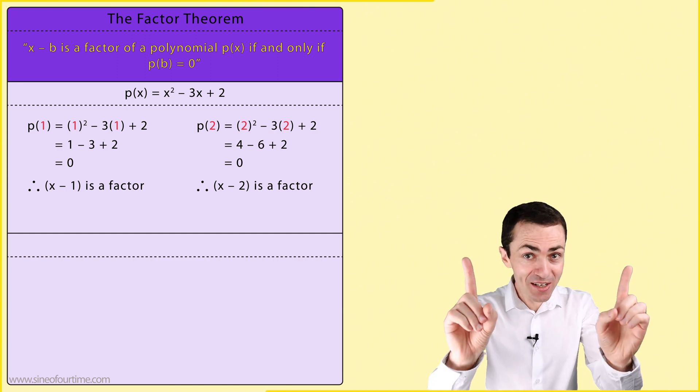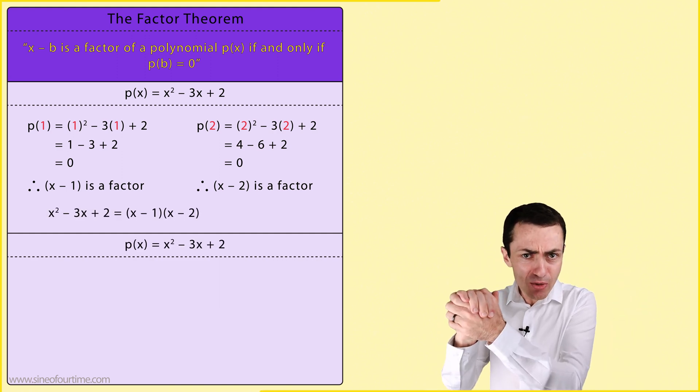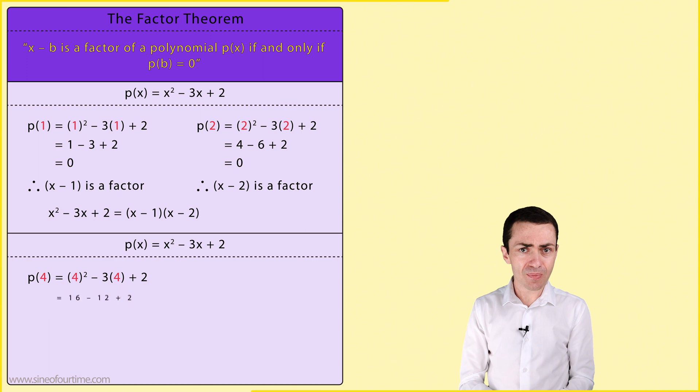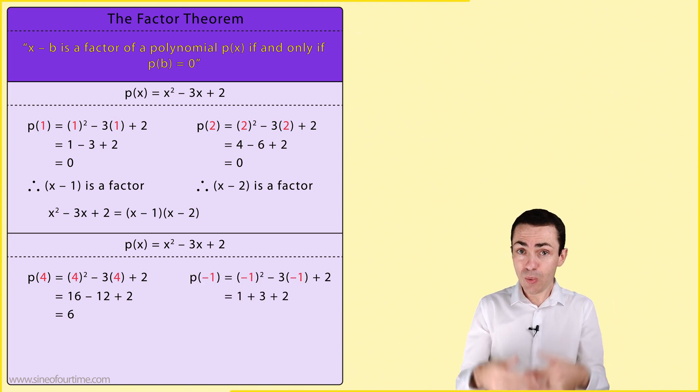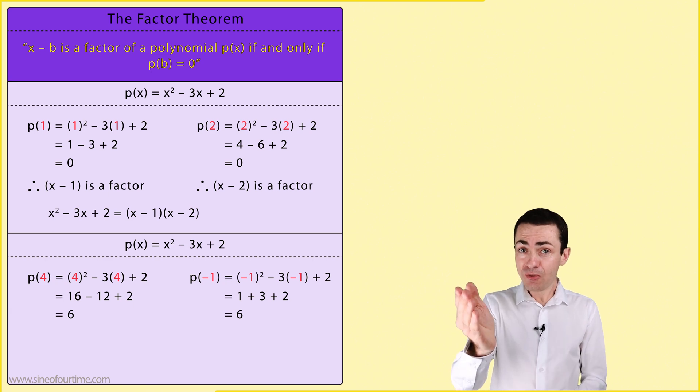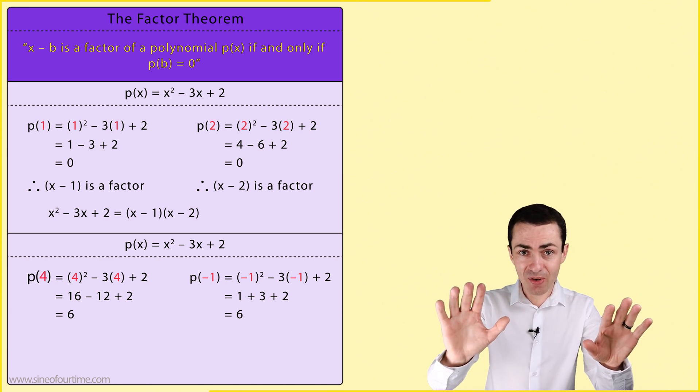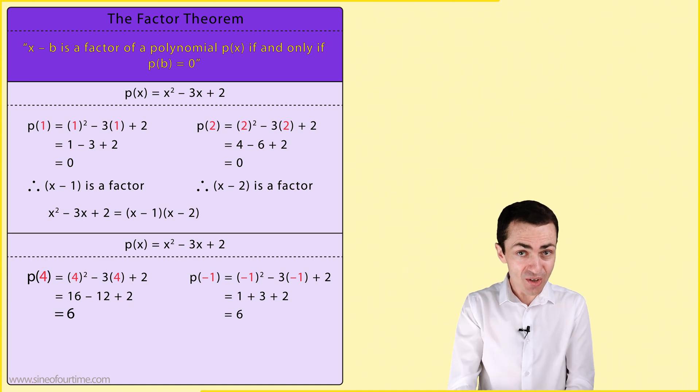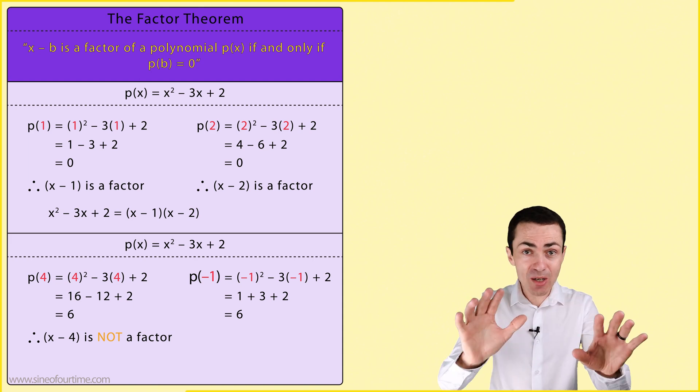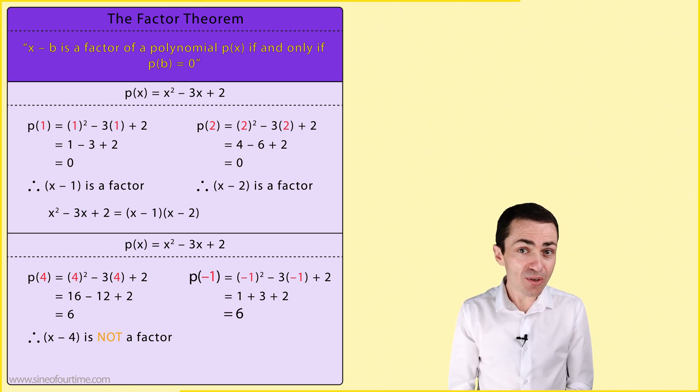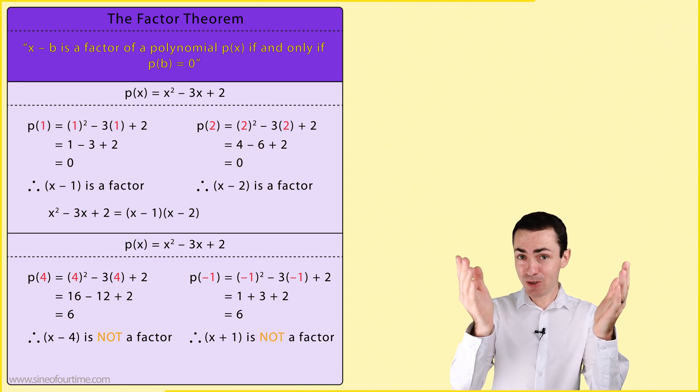Exactly what we established earlier. Now if we try to substitute 4 in place of x, we get 6. And if we try to substitute negative 1 in place of x, we also get 6. According to the factor theorem, since p(4) is not equal to 0, we can conclude that x minus 4 is not a factor. And since p(-1) is also not equal to 0, we can conclude that x plus 1 is also not a factor.